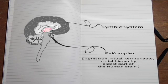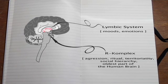Surrounding the R complex is the limbic system, or mammal brain. It's a major source of our moods and emotions.